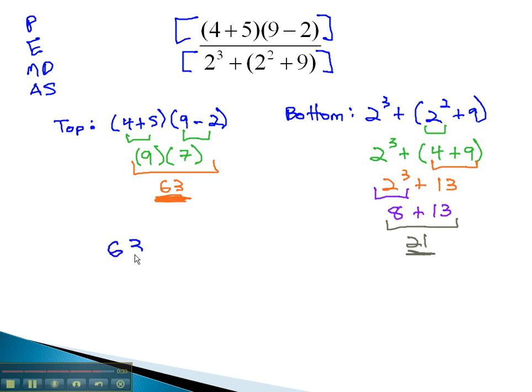Put it all together, we have sixty-three on top, twenty-one on the bottom, and we have a fraction that we can actually reduce. Twenty-one goes into sixty-three three times, and we have our final solution.